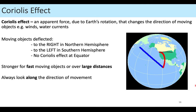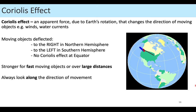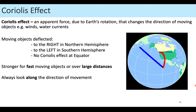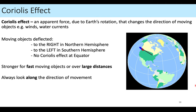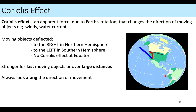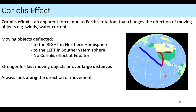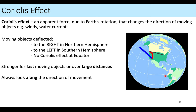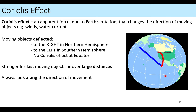The Coriolis effect is going to be stronger and more severe for objects moving fast and/or covering longer distances. A tip: always think along the direction of movement. You might have to flip your paper around or turn your head to look in the direction of motion to determine if it's a right turn or a left turn. Always make sure you're drawing your arrow to the right of the direction of motion in the northern hemisphere.